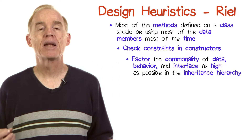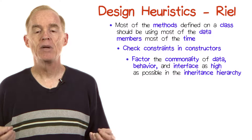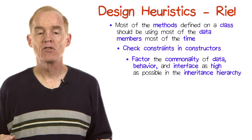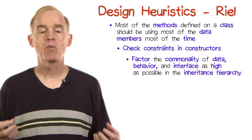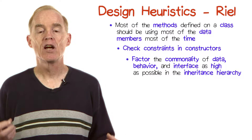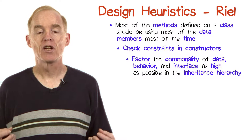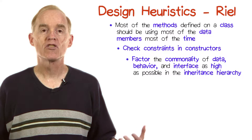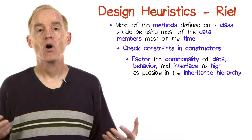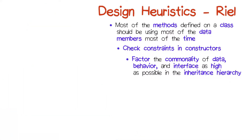Another heuristic: factor the commonality of data, behavior, and interfaces as high as possible in the inheritance hierarchy, thereby facilitating reuse. This of course is standard OO dogma.